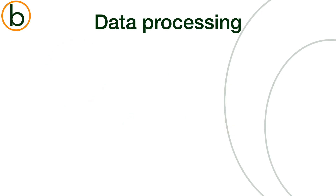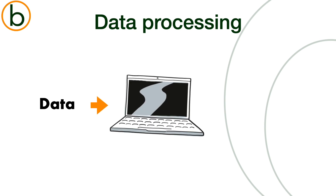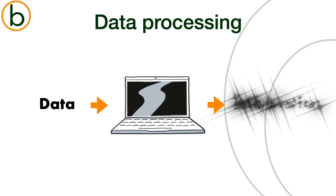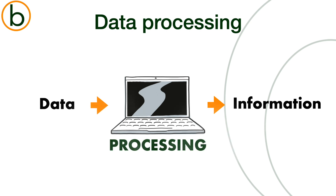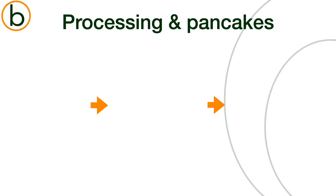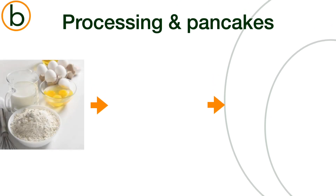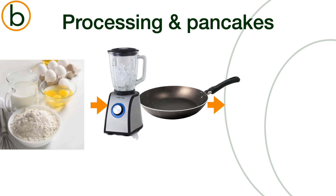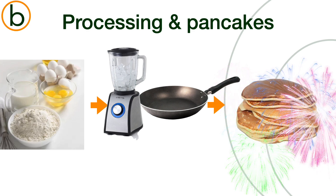But first we have to talk about data processing. Data processing is what computers do — they transform data into information. What's the difference between those two? Think about pancakes. When you want to make pancakes, you gather ingredients: flour, eggs and milk. Then you process these ingredients — you mix and bake. In the end, you have pancakes.